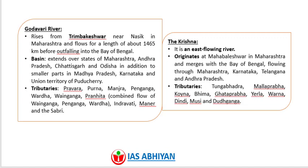About the Godavari River: the Godavari rises from Trimbakeshwar near Nashik in Maharashtra and flows for a length of about 1,465 kilometers before outfalling into the Bay of Bengal. It extends over the states of Maharashtra, Andhra Pradesh, Chhattisgarh, and Odisha, with smaller parts in Madhya Pradesh, Karnataka, and Union Territory of Puducherry. The tributaries of the Godavari include Pravara, Purna, Manjra, Penganga, Wardha, Wainganga, Pranhita, Indravati, Maner, and Sabari.